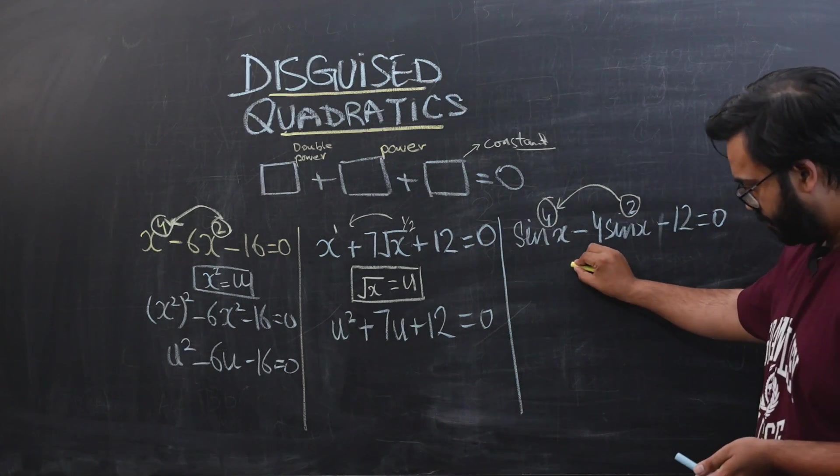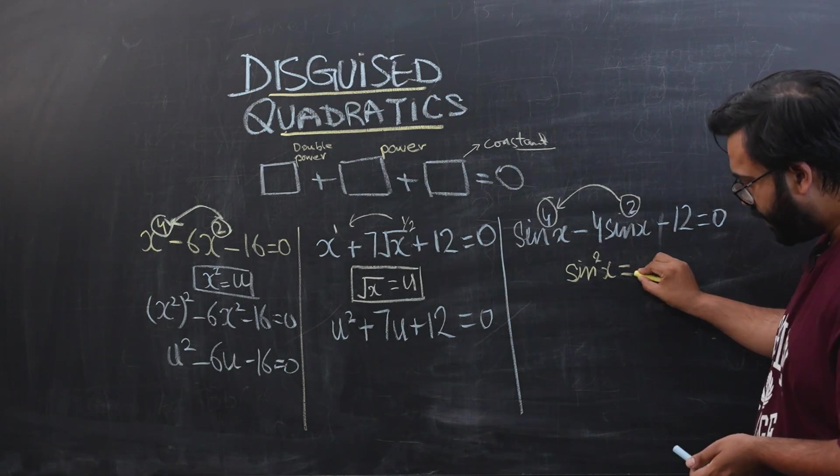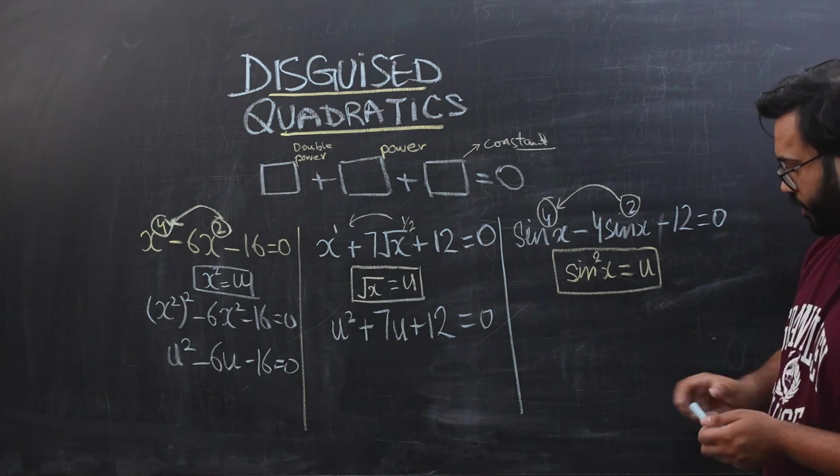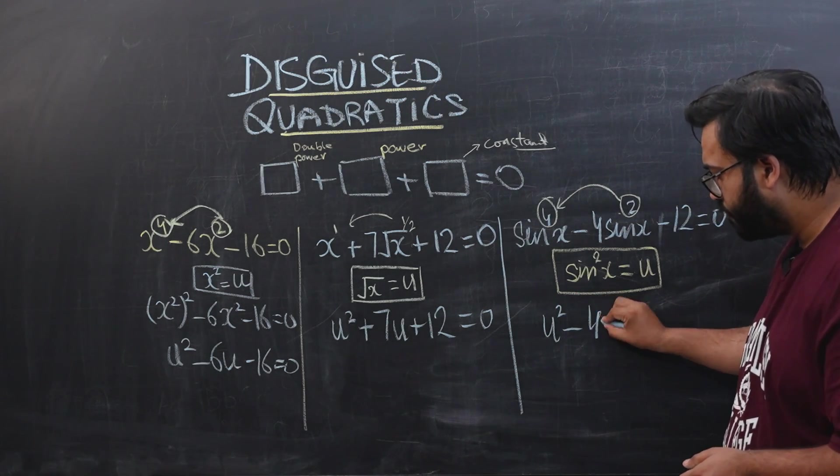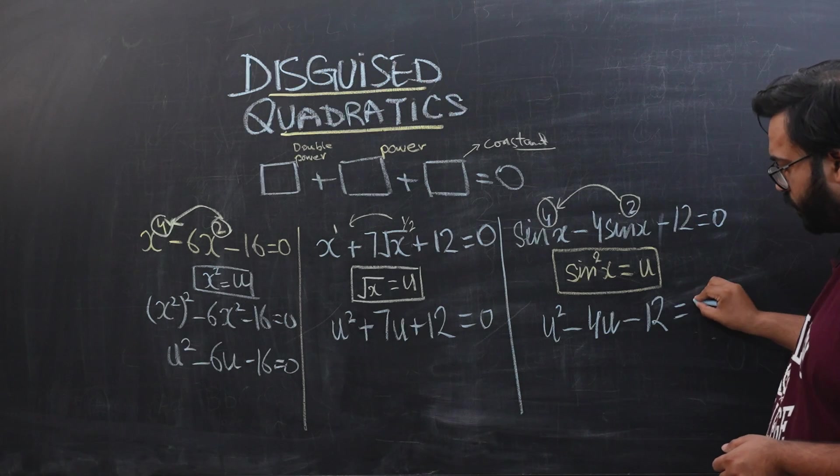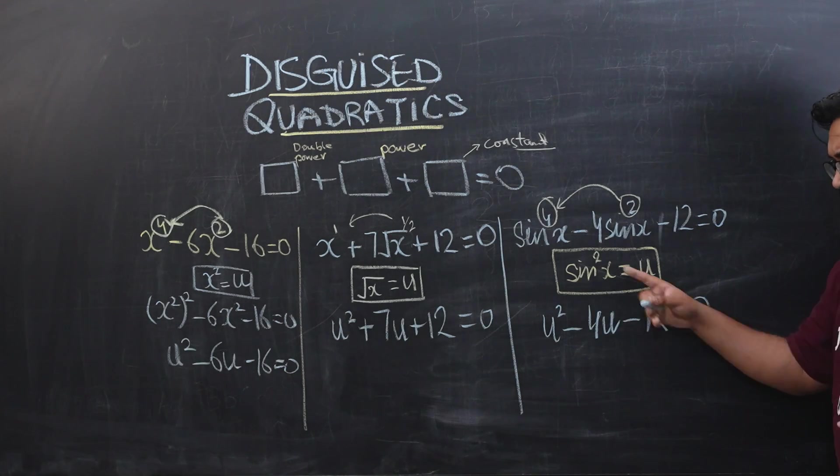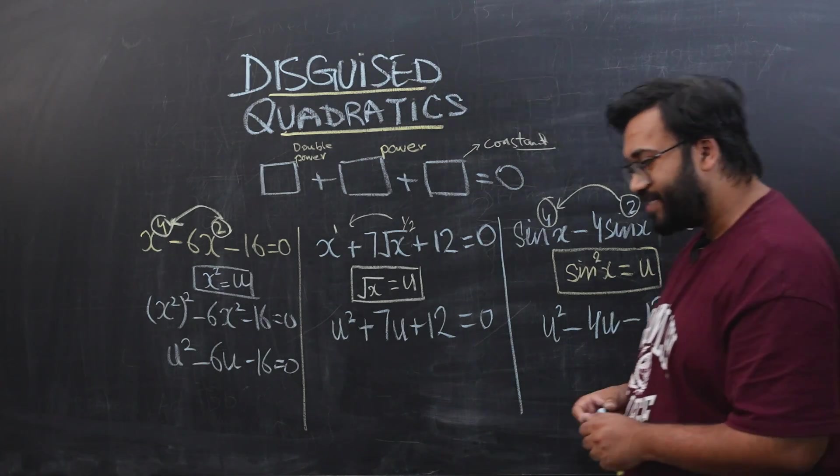What we're going to do is we're going to take sine squared x as our substitution. We will say this is u squared minus 4u minus 12 equals zero. First solve for u, replace the values for u over here, then take square root and solve for sine x and you can solve this later on.